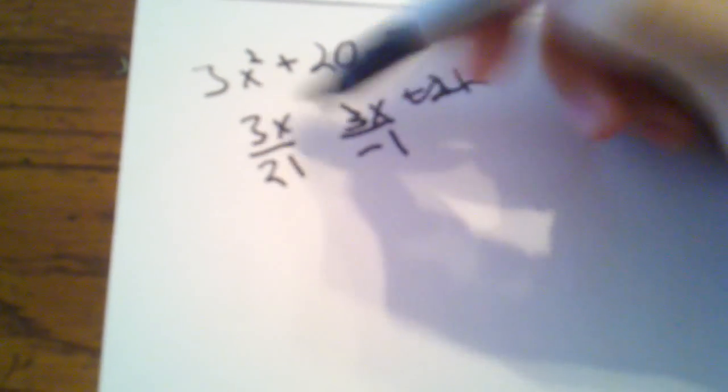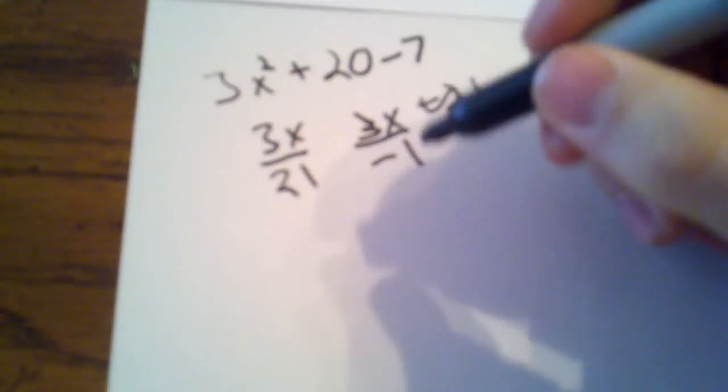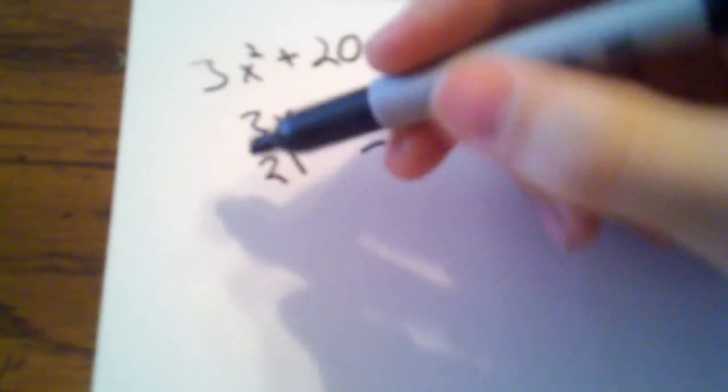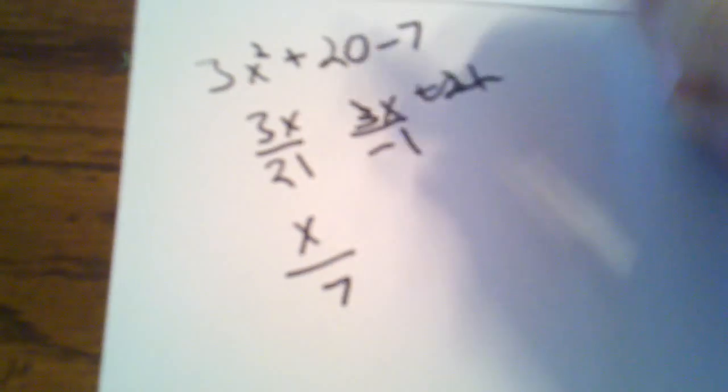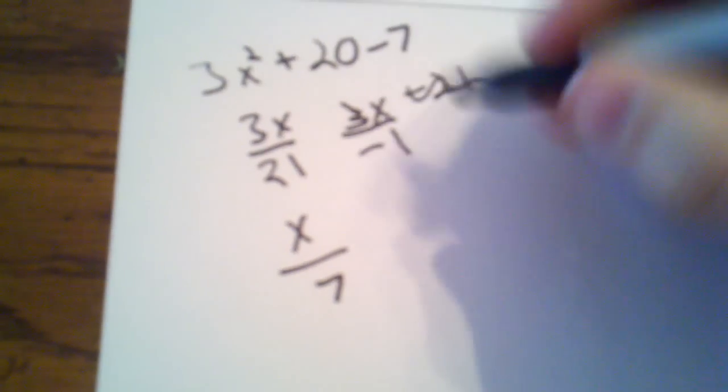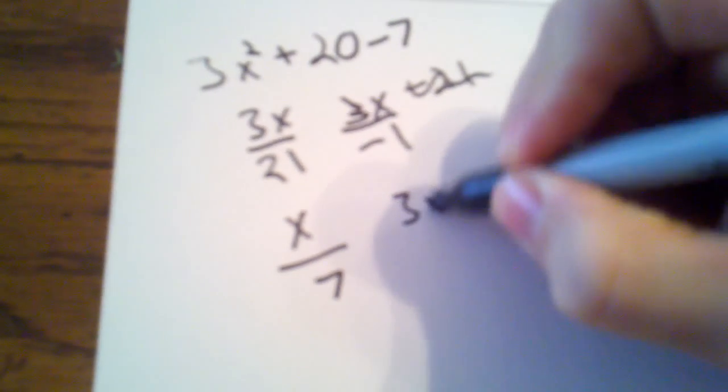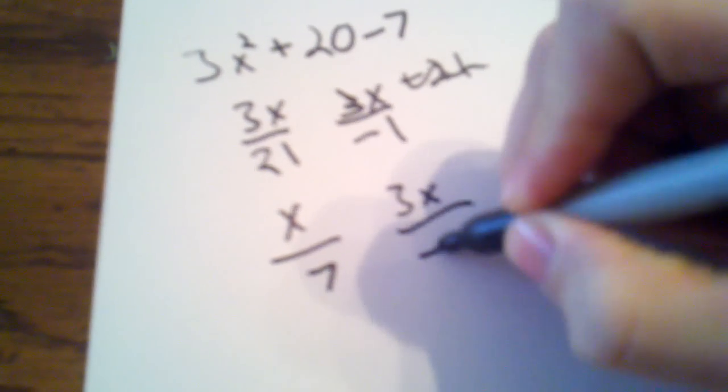Now, let's simplify these just like they would be any other fraction. So you can divide these by 3 to get an x over 7, and this one cannot be simplified any further, so that will stay 3x over a negative 1.